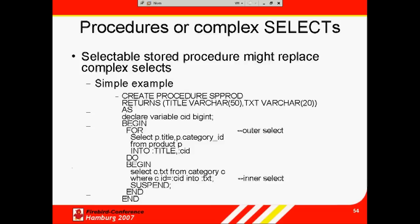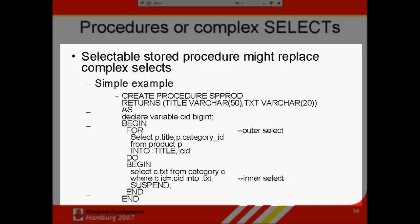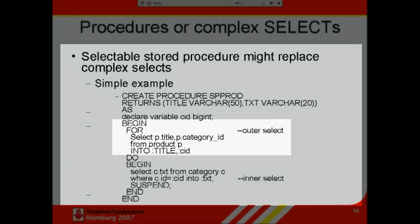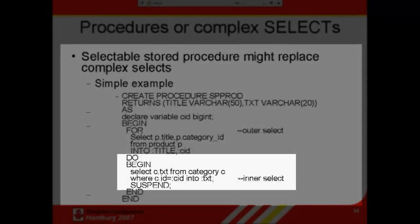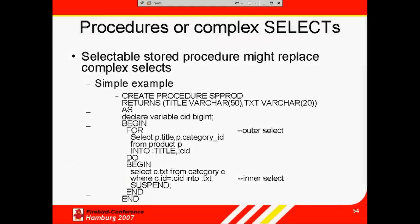Procedures or complex selects. Selectable procedures can sometimes offer higher performance than complex selects. The more complicated a procedure is, the more important it is to carefully prepare and test it. Here I have a procedure with an outer select where the category is fetched in an inner select — this simple example is mimicking a join. The procedure returns a title and some text: first it goes through all the products selecting the relevant titles, then another select is nested within the procedure providing information for the second output field, CID. Although some developers feel there is no reason to construct procedures this way, the optimizer can have problems with certain joins because it takes too long to work out how to approach the query. Breaking things down like this can often provide a more immediate response.